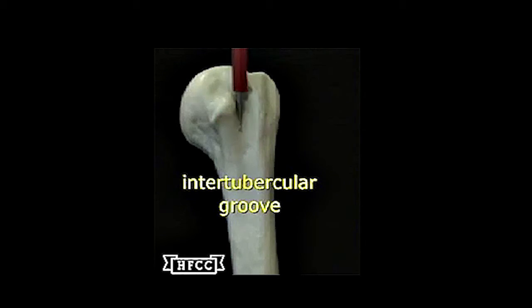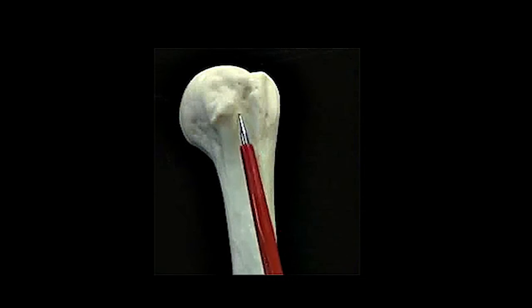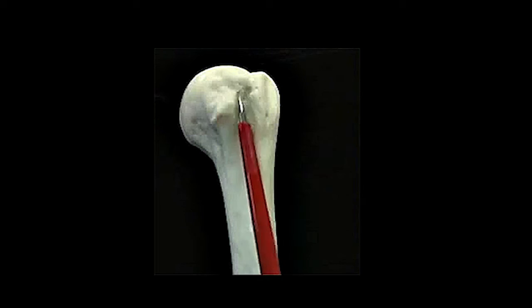Between the greater and lesser is this trough, or trench, called the intertubercular groove. They get encircled, or highlighted. And laying the pointer in from this side in that same intertubercular groove. Again, for muscle attachment.